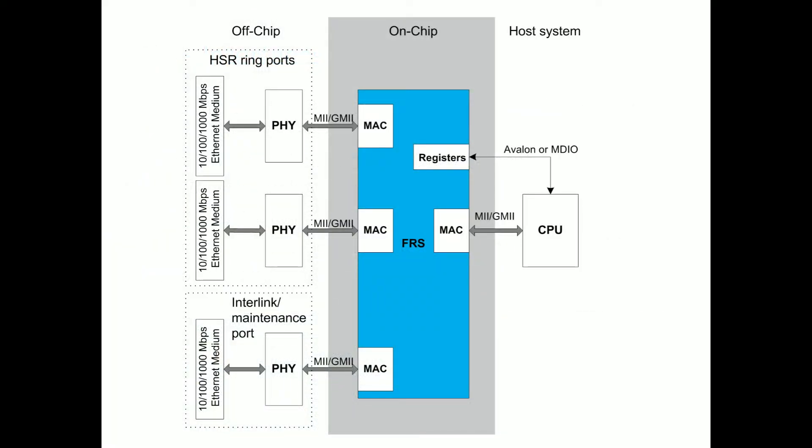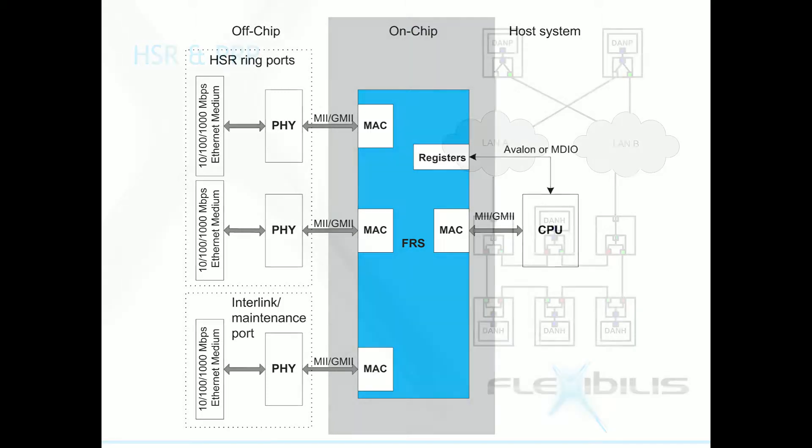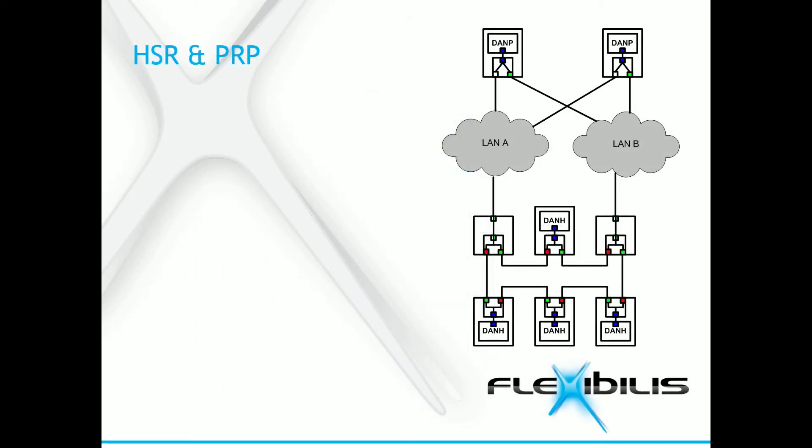Here is an example block diagram of a system with a 4-port FRS. Two ports are redundant ports going to the HSR or PRP network. One is an interlink port and the fourth port is going to the external CPU. The PTP protocol stack and HSR PRP supervision run on it.